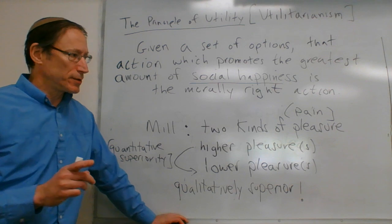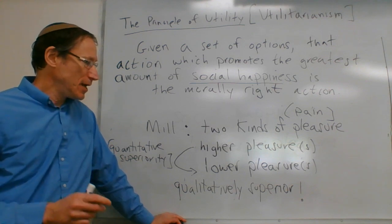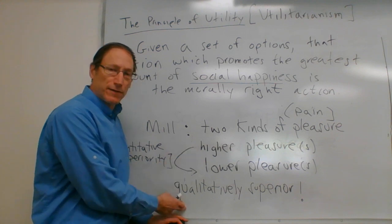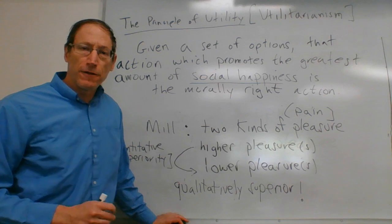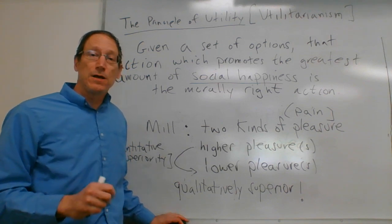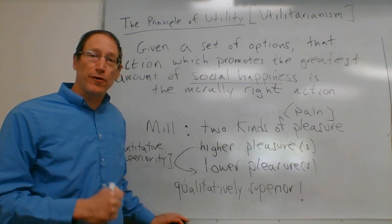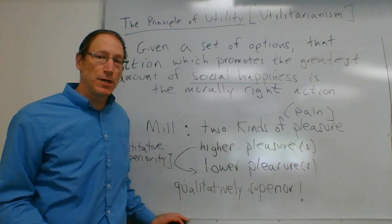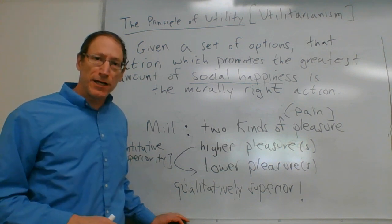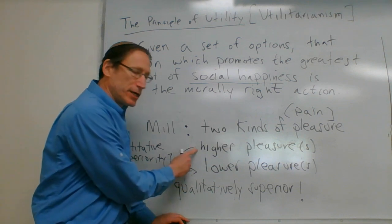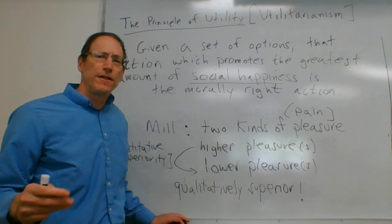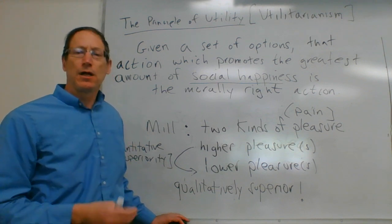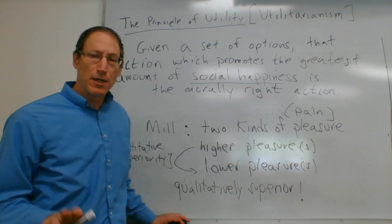Mill adds an important point: how does he know that higher pleasures are qualitatively superior? His answer is that if you ask people who have experienced both forms of pleasure — which is basically most of us — they will tell you from their own experience that mental pleasures, like enjoying reading a good book or pleasures of conversation, are qualitatively superior to physical pleasures. That is his argument.